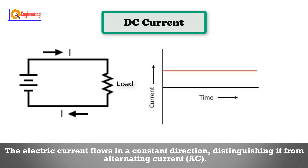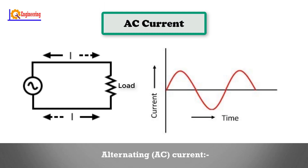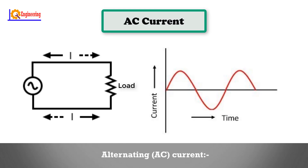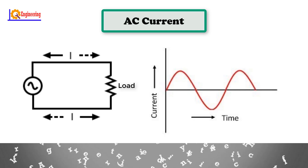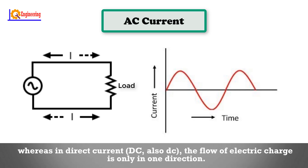The electric current flows in a constant direction, distinguishing it from alternating current (AC). Alternating current (AC) is an electric current in which the flow of electric charge periodically reverses direction, whereas in direct current (DC) the flow of electric charge is only in one direction.